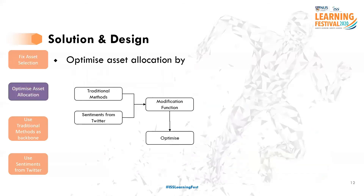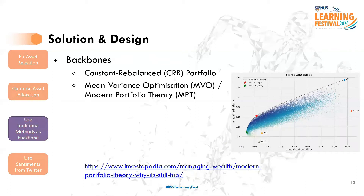To optimize our asset allocation, the basic idea is to take the output from traditional methods and also take Twitter sentiments into account by passing them into some kind of modification function. From there, we get our output which we can optimize, such that we maximize whatever KPI we are interested in, such as cumulative gains. For traditional methods, I'll consider a constant rebalanced portfolio — that is, to rebalance based on constant predetermined allocation percentage. For MVO, we optimize such that the allocation is sitting on the efficient frontier to attain maximum Sharpe ratio.